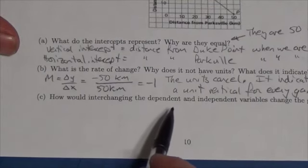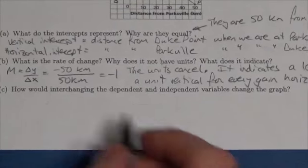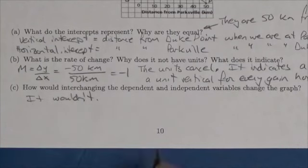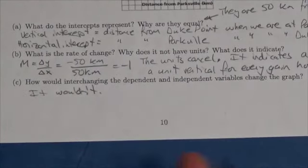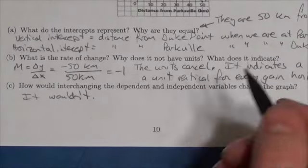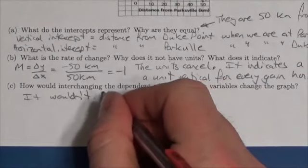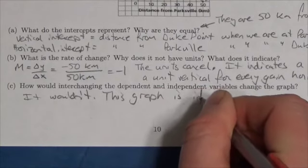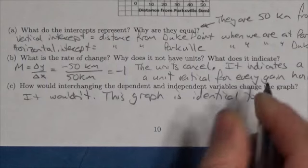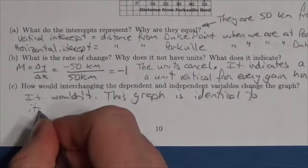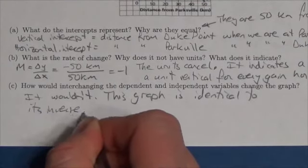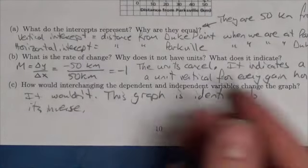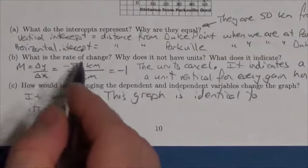So how would interchanging the dependent and independent variables change the graph? It wouldn't. This particular graph, the inverse if you will, this graph is identical to its inverse.